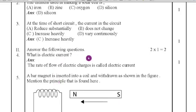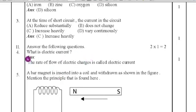Second main, answer the following questions here. Two questions are there. Each question carries one mark. Fourth question, what is electric current? The rate of flow of electric charges is called electric current.